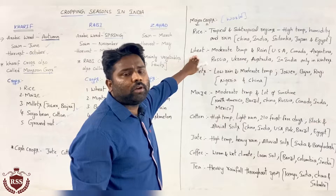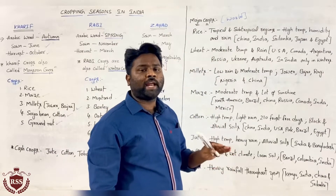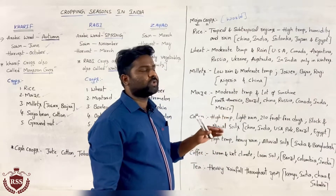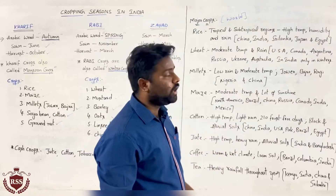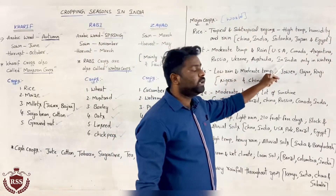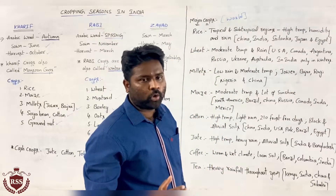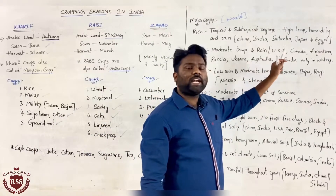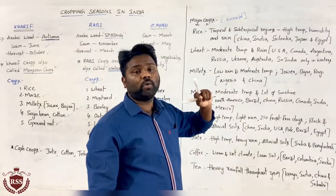Coming to wheat, for growing wheat we need moderate temperatures and moderate rainfall when compared to rice — no need of that much high temperature, just moderate temperatures. The countries which are majorly growing wheat are USA, Australia, Canada, Argentina, Russia, Ukraine, and India — but in India only in winter seasons, because we need some moderate temperature.